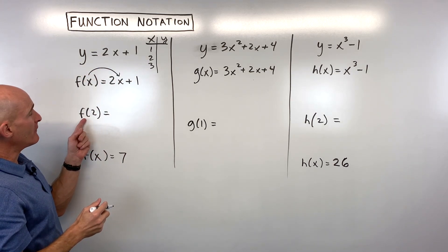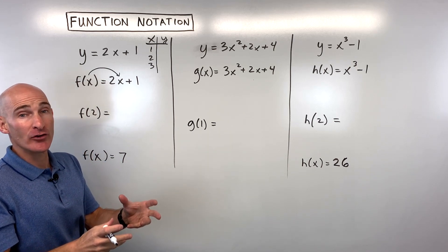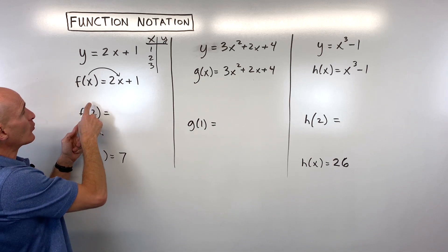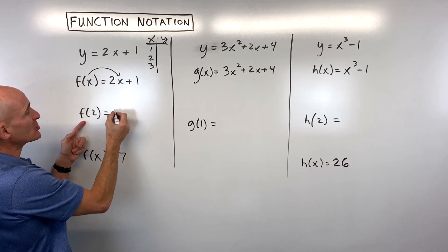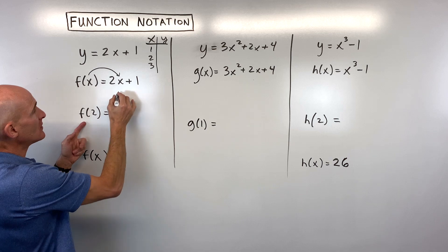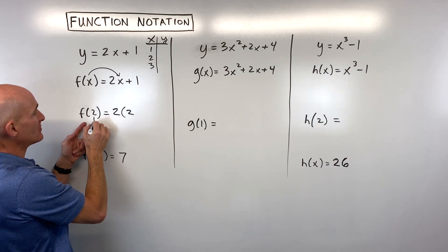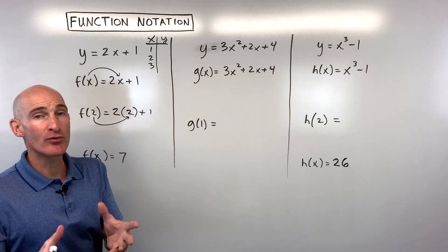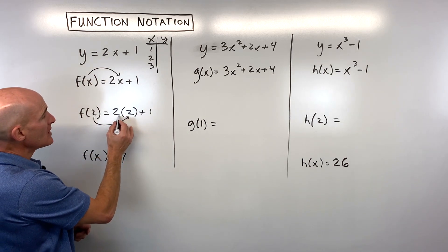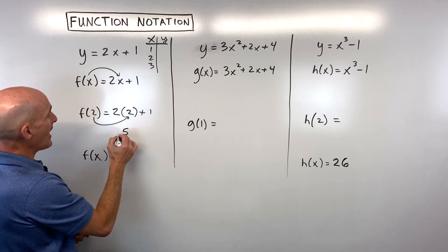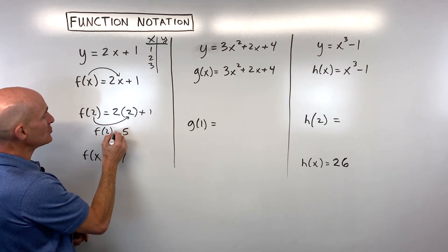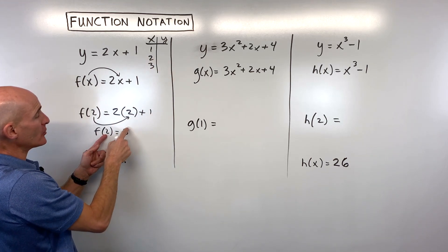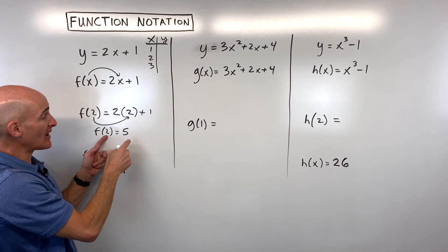For example, if I want to evaluate — which means find the value — of f of 2, that means wherever I see x, I'm going to replace it with the number 2. I like to put it in parentheses when I do a substitution — treat it like a group. Two times two is four, plus one is five. So we can say that f of 2 is equal to 5. Two is our x value, and our y value, or output, or f of x value is five.